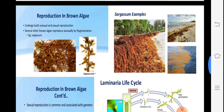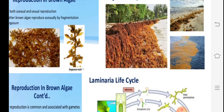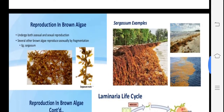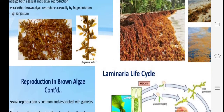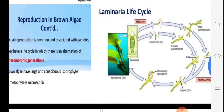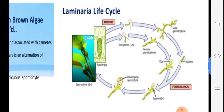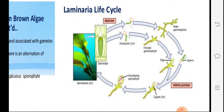You are observing Sargassum — the photograph shows what is called the Sargasso Sea, where Sargassum is the dominant alga. The main characteristic of Sargassum is that it shows air bladders.